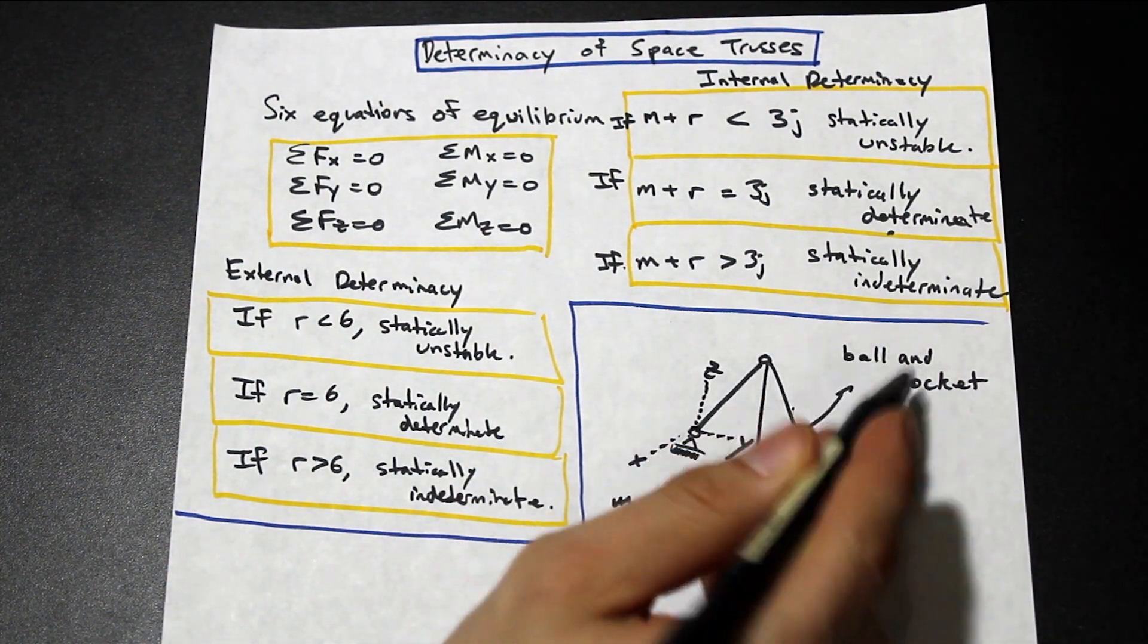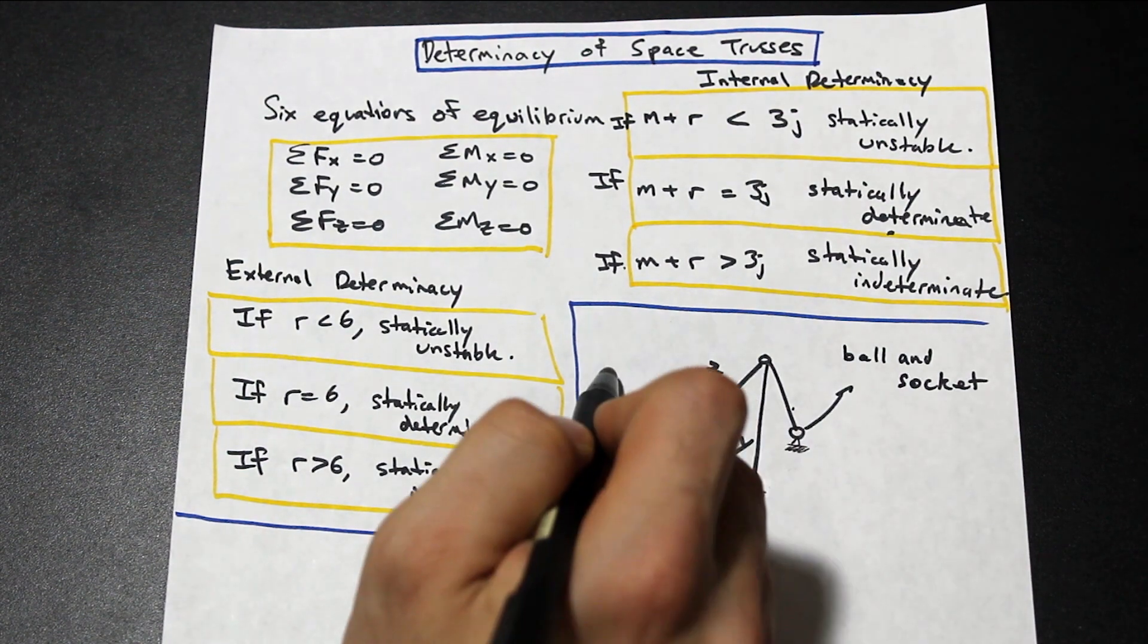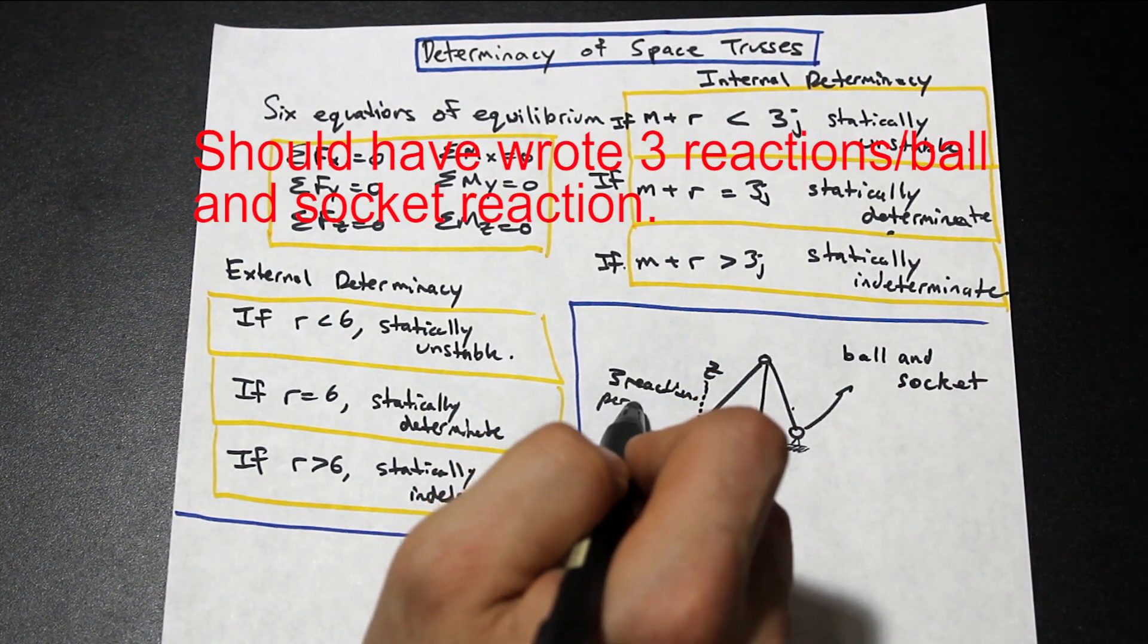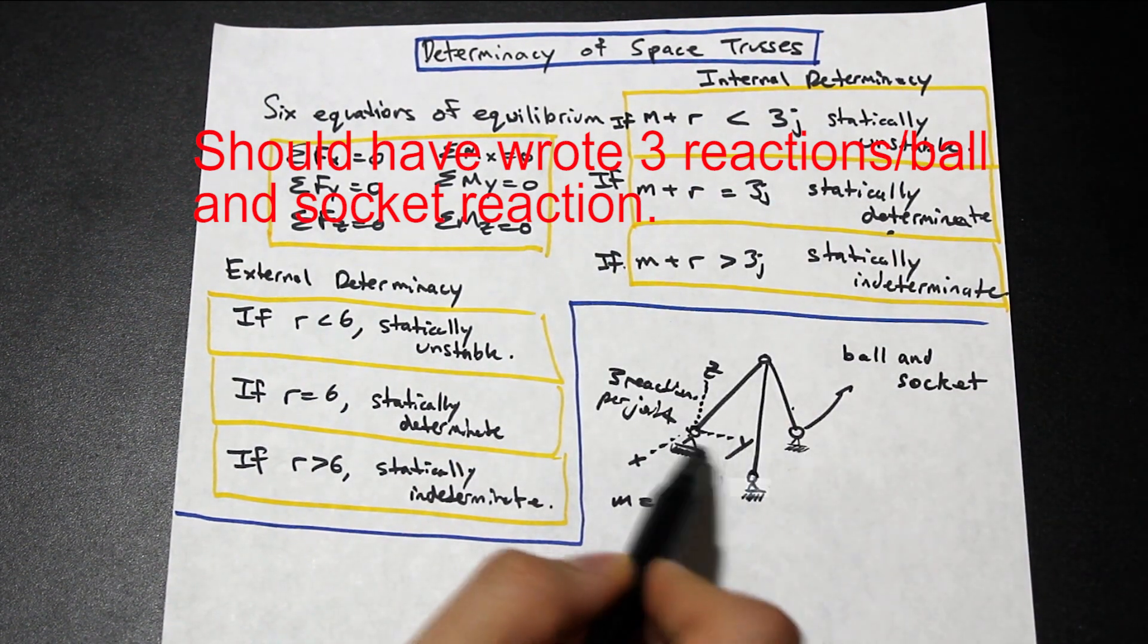So that means that each one of these ball and socket joints has three reactions. So three reactions per joint. Perfect. So if we have three reactions per joint, these are all the same joints.